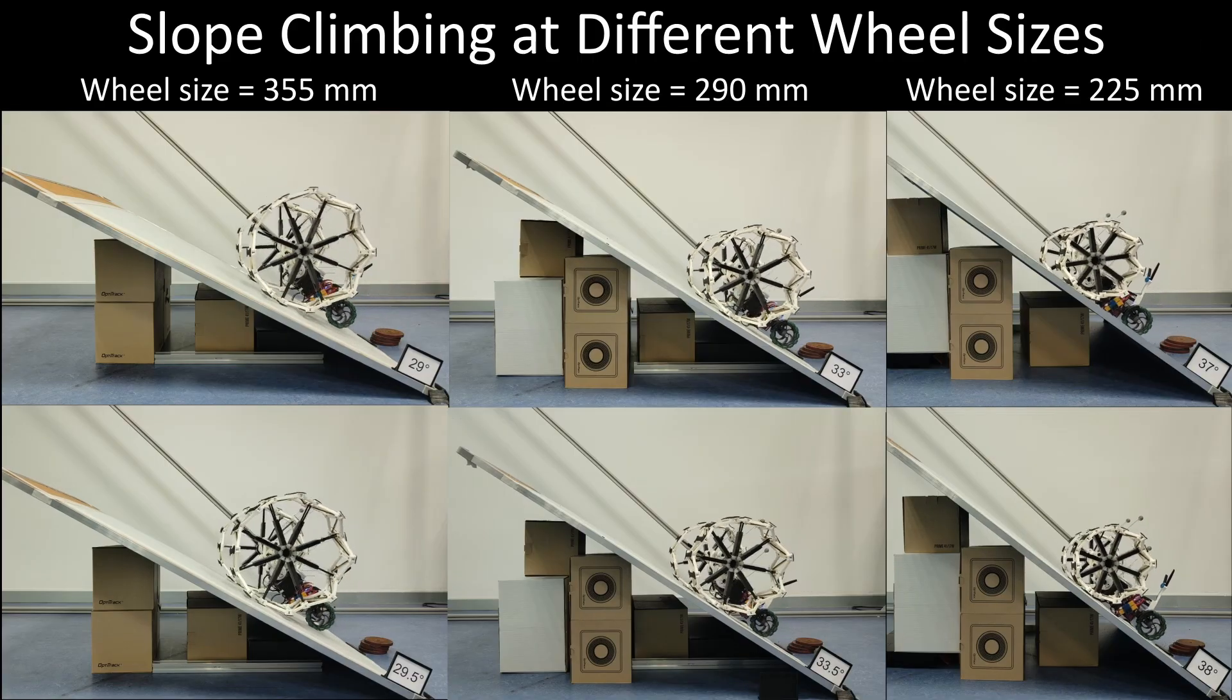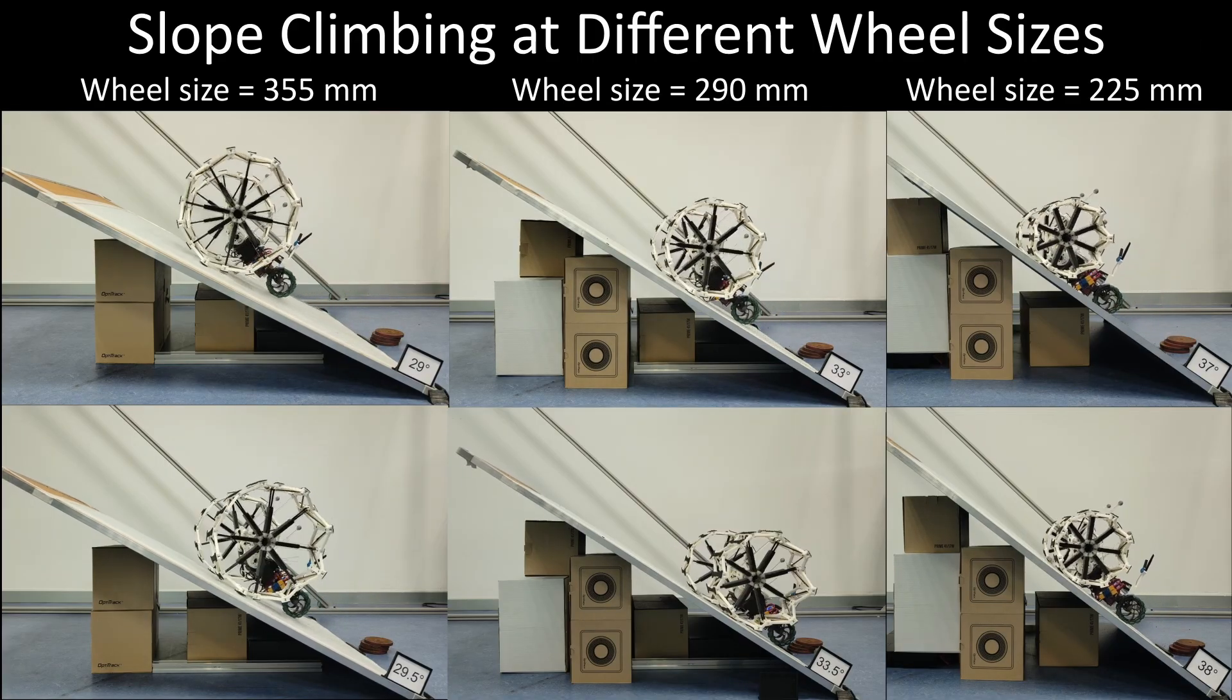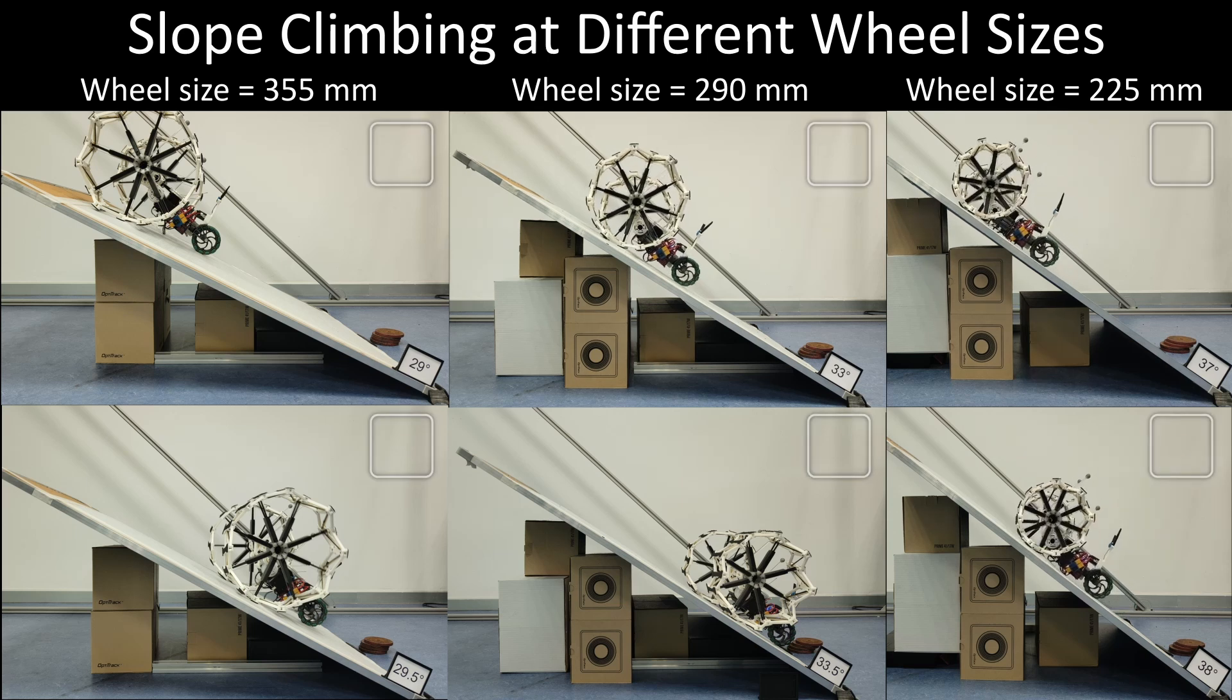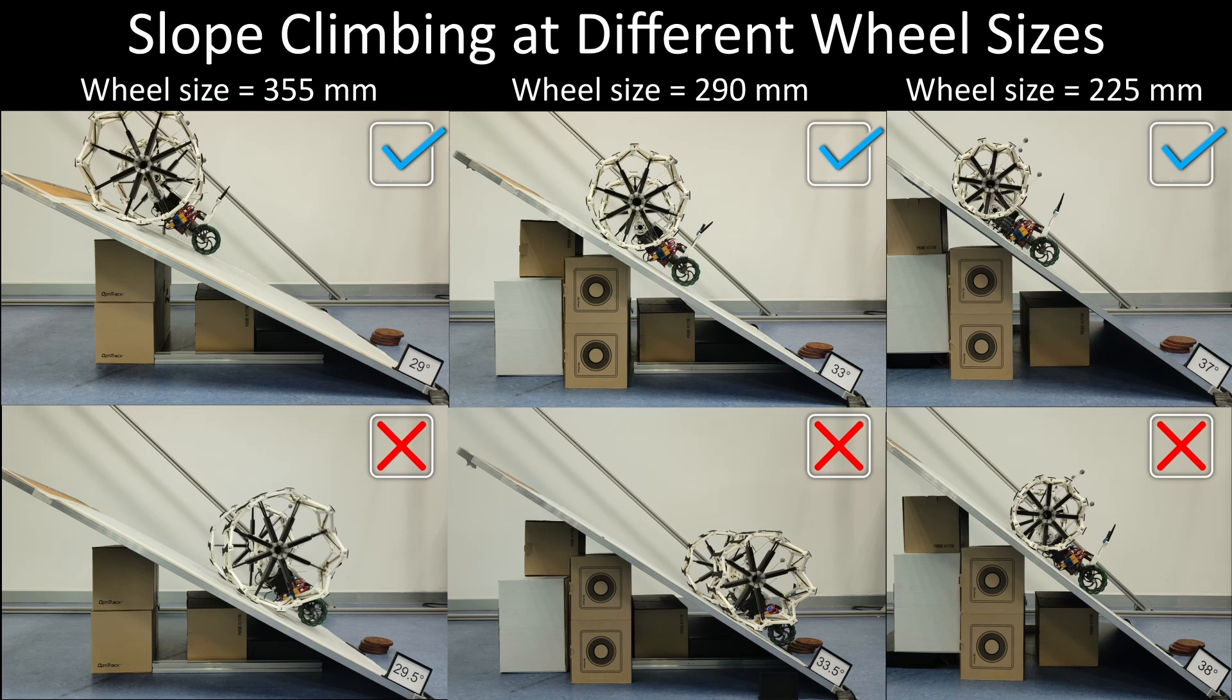The wheel size change also affects slope climbing performance. In our experiments, the robot was able to climb 29, 33, and 37 degree slopes with 355, 290, and 225 mm wheel diameters, respectively.